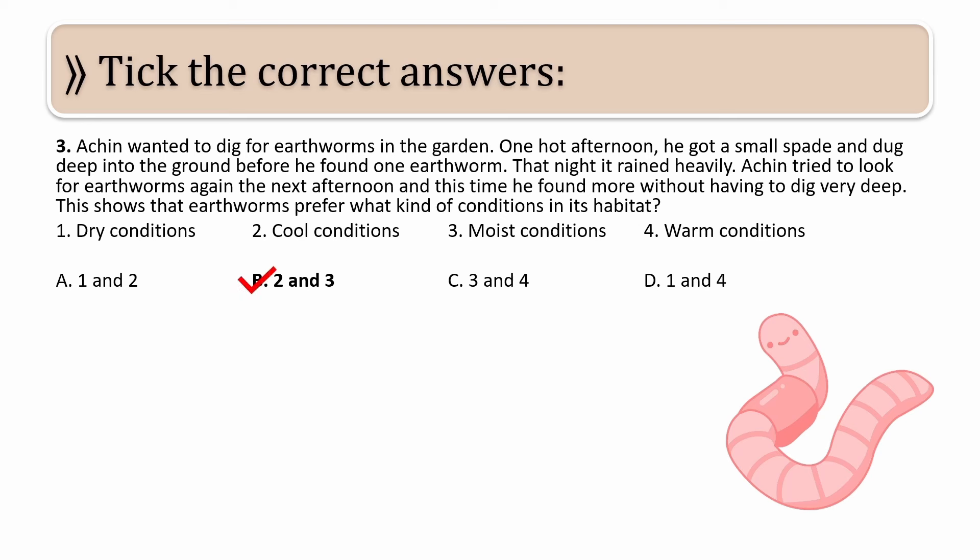The correct answer is B, that is 2 and 3, cool and moist condition. After it has rained, the temperature decreased, also there is moistness, and therefore the number of earthworms increased.